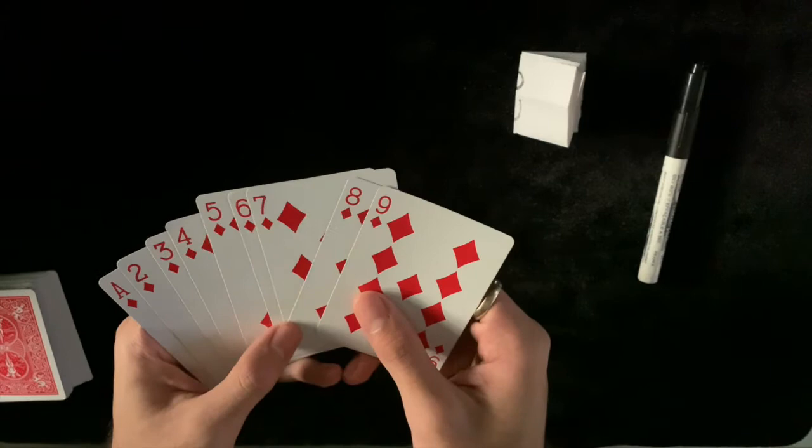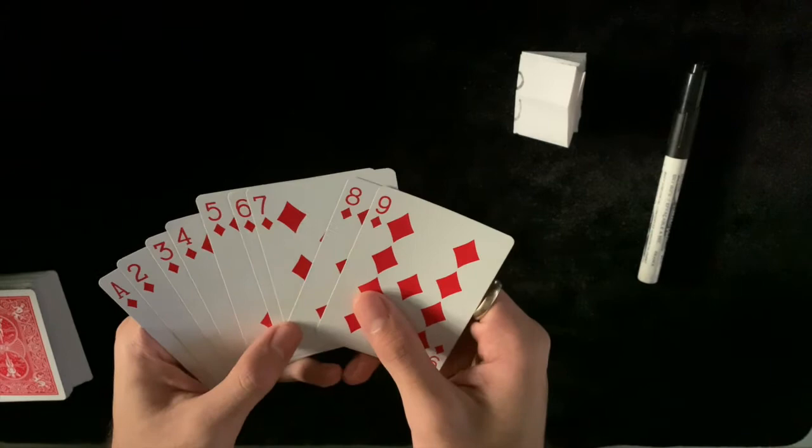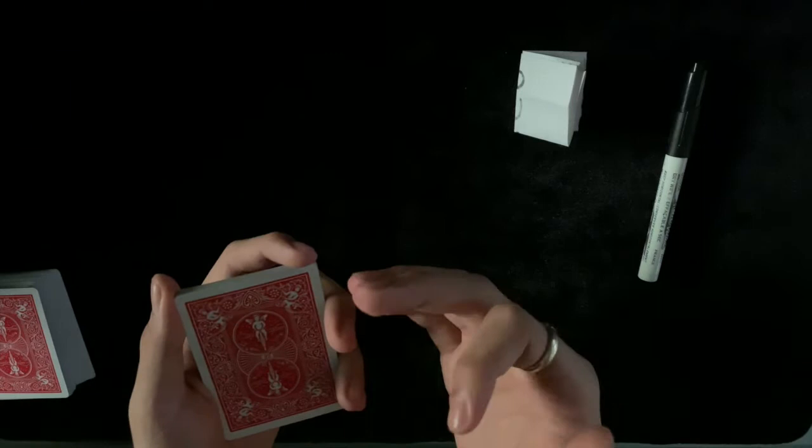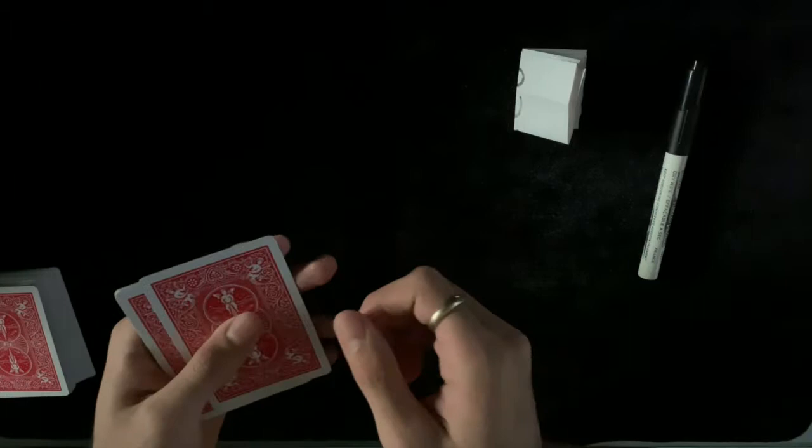Great, so I have Ace through 9 of diamonds right here in an ascending order as you can see. Now for this trick, we'll try and play a game where your aim will be to try and mix up the cards as much as you can. And I will try and influence your choices.